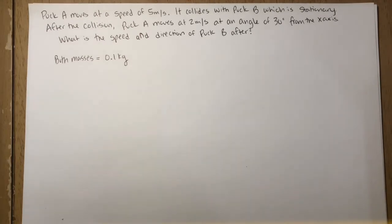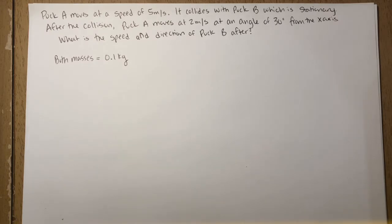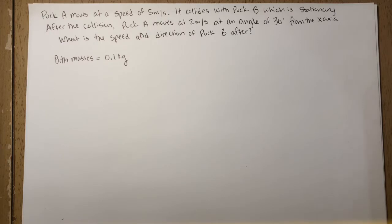We are going to do the problem that is in your PowerPoint. I'm going to show you handwritten how to do it. The question states: puck A moves at a speed of 5 meters per second. It collides with puck B, which is stationary. After the collision, puck A moves at 2 meters per second at an angle of 30 degrees from the x-axis. What is the speed and direction of puck B after? We're going to give both masses 0.1 kilograms. Our first step is to draw it out.